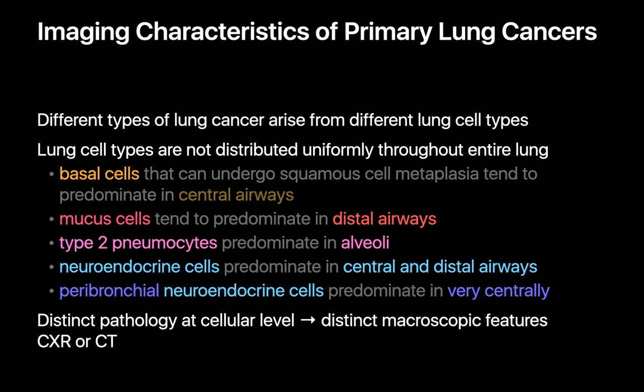A basic appreciation of the histopathology of lung cancer can go a long way in helping us predict, understand, and remember the imaging characteristics of primary lung cancers. Different types of lung cancers arise from different cell types that are not distributed uniformly. Basal cells giving rise to squamous cell carcinomas predominate in central airways; mucous cells giving rise to invasive adenocarcinomas predominate in peripheral airways; type 2 pneumocytes giving rise to minimally invasive adenocarcinomas are found in alveolar sacs; and neuroendocrine cells giving rise to small cell lung carcinomas are situated in a peribronchial, very central location.